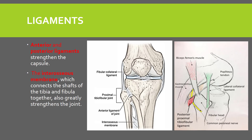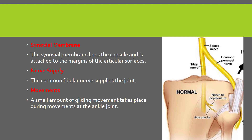There is also the interosseous membrane — see here — which connects the shaft of the tibia and the fibula and also strengthens the joint. The synovial membrane lines the capsule and is attached to the margins of the articular surfaces. The common fibular nerve, which is a branch of the sciatic nerve, supplies the proximal tibio-fibular joint. Because it is a plane gliding joint, a small amount of gliding movement takes place during movements.